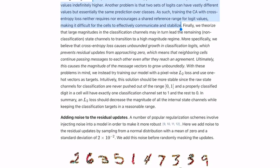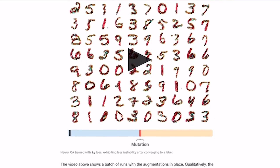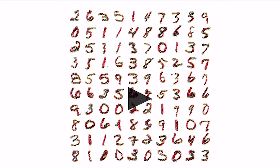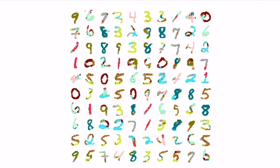Luckily, we can fix that by changing the loss function, as you can see here. I'm going to stop here with the Distill examples, but I've included links in the description to both the articles themselves as well as the Colab notebook, if you'd like to see some of the other experiments they run on self-classifying MNIST digits, or if you'd like to try your hand at it yourself.